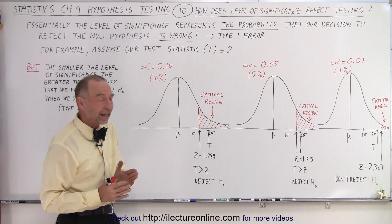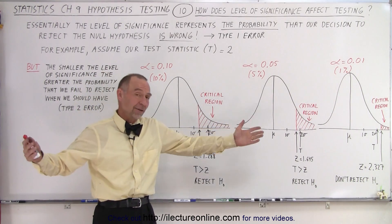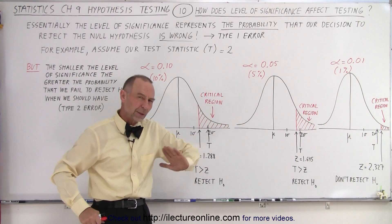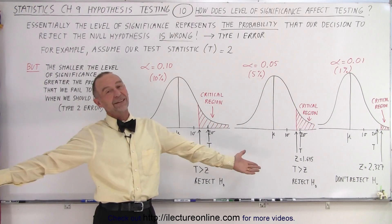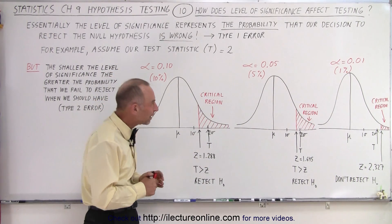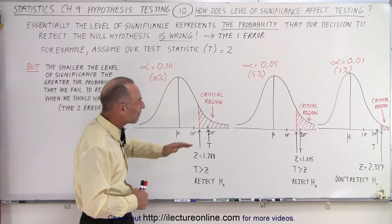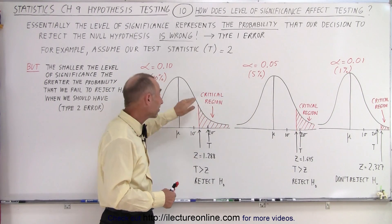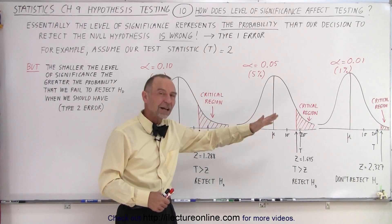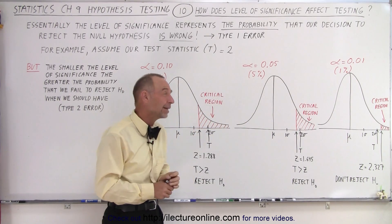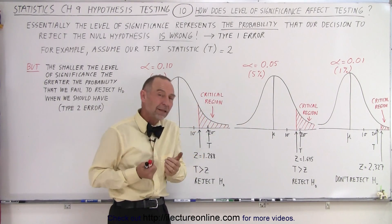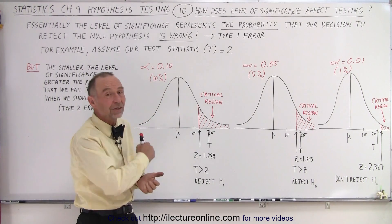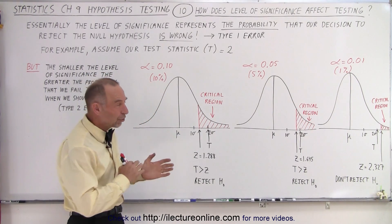It's a balancing act. We can make it really tight and say, oh, I'm not going to reject it until I'm really, really sure, but that's not necessarily the right thing to do. That's why, typically, a level of significance of about 5% is kind of a common thing to use, sometimes 10%. 1% is not as common because that makes it really tight, and you increase your probability of a Type 2 error, where you don't reject the null hypothesis when you should have.